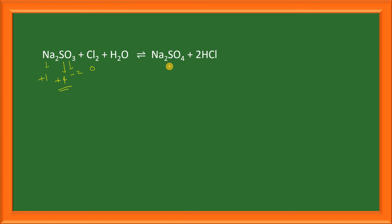So from +4 it has got converted to +6, and this Cl2 from 0 it has got converted to -1. So Cl2 has undergone reduction here and sulfur has undergone oxidation here.